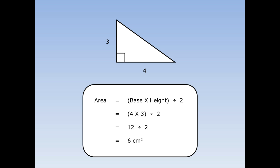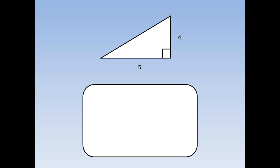Don't forget to put the units. Let's work out the area of this triangle. The base is 5 and the height is 4. Start off by writing out the formula: area of a triangle is base times height divided by 2. Fill in the numbers — the base is 5 and the height is 4, so we've got 5 times 4 divided by 2. 5 times 4 is 20, so it's 20 divided by 2, and that's equal to 10 centimetres squared. Again, we've remembered to put the units of centimetres squared.